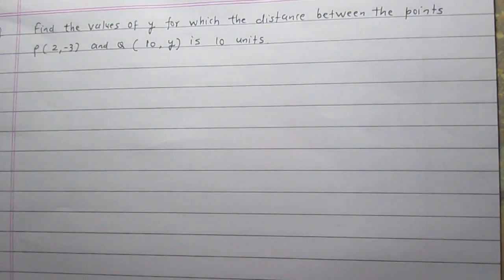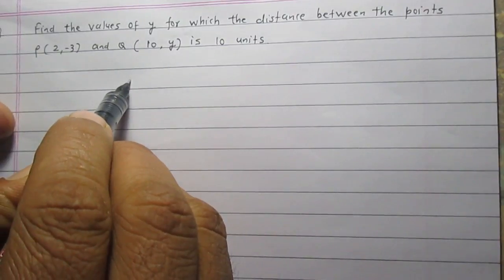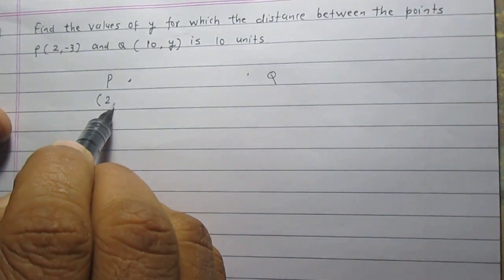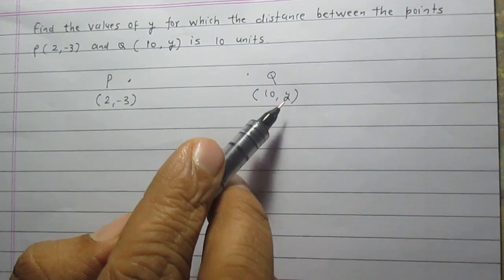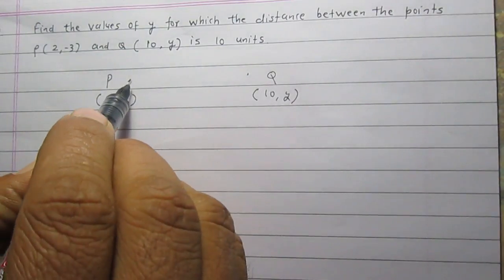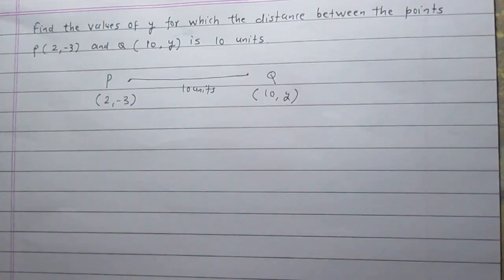Find the values of y for which the distance between the points P and Q is 10 units. The coordinates of point P are (2, -3) and the coordinates of point Q are (10, y). We are given two points P and Q, where y is a variable we need to find, and the distance PQ is equal to 10 units.